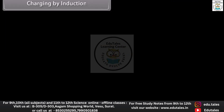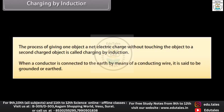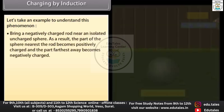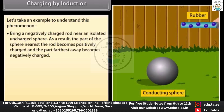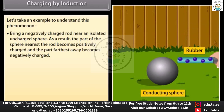Charging by induction: the process of giving one object a net electric charge without touching the object to a second charged object is called charging by induction. When a conductor is connected to the earth by means of a conducting wire, it is said to be grounded or earthed. To understand this, bring a negatively charged rod near an isolated uncharged sphere — the part of the sphere nearest the rod becomes positively charged.